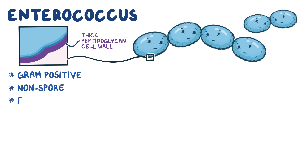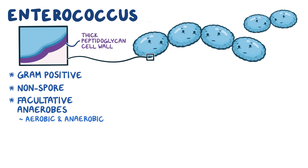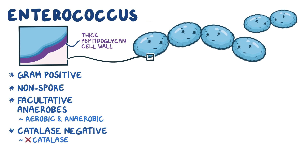They're non-spore-forming, facultative anaerobes, meaning that they can survive in both aerobic and anaerobic environments, as well as catalase-negative, which means that they don't produce an enzyme called catalase.